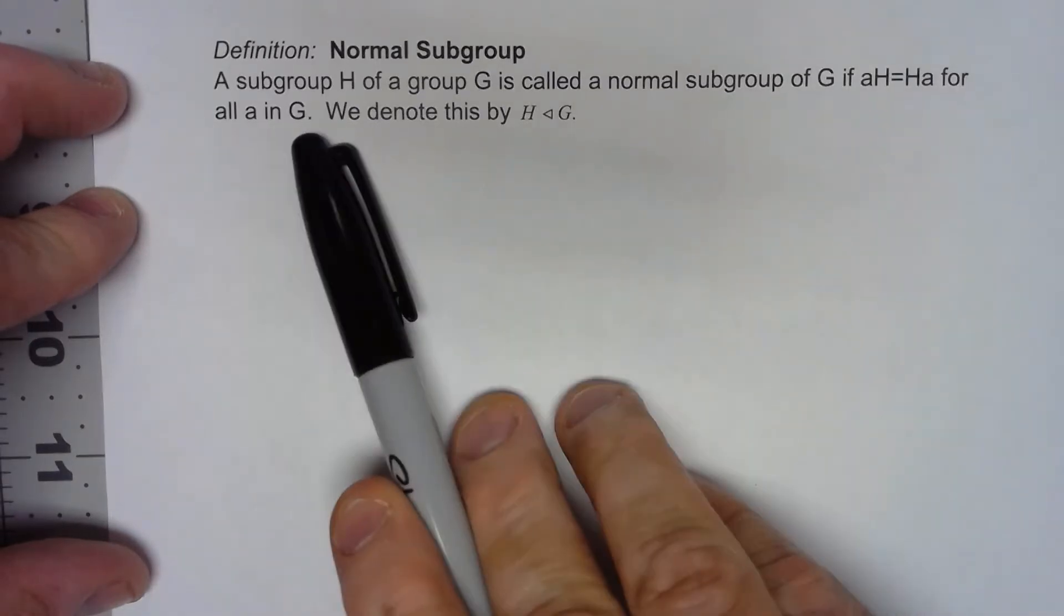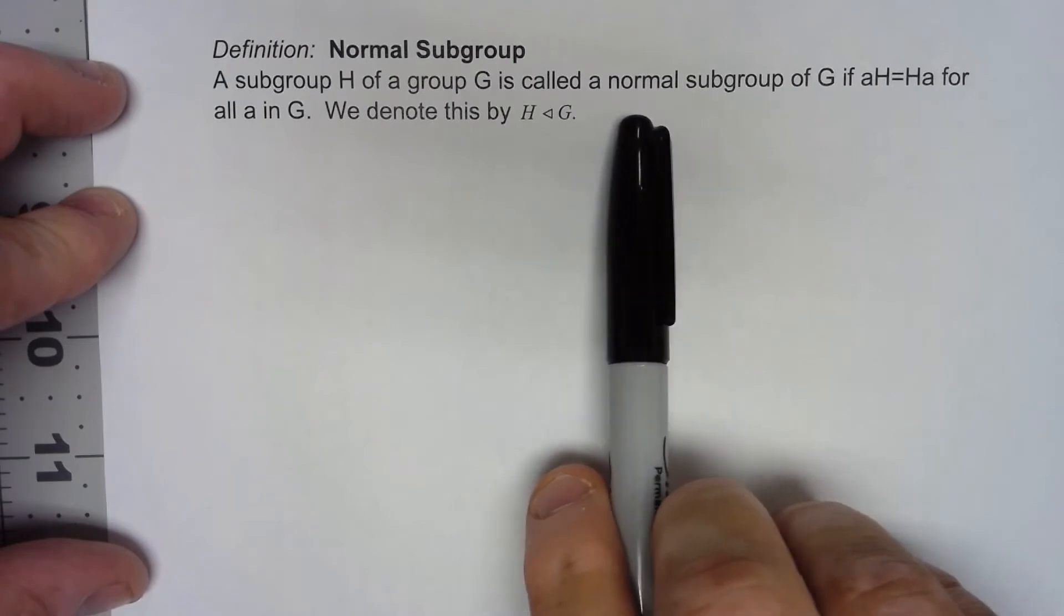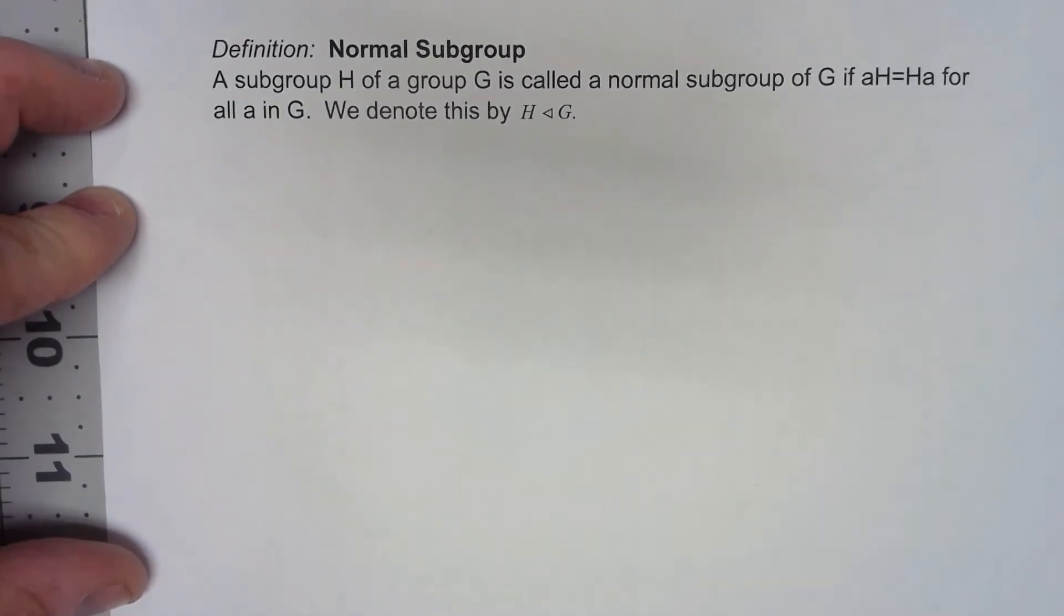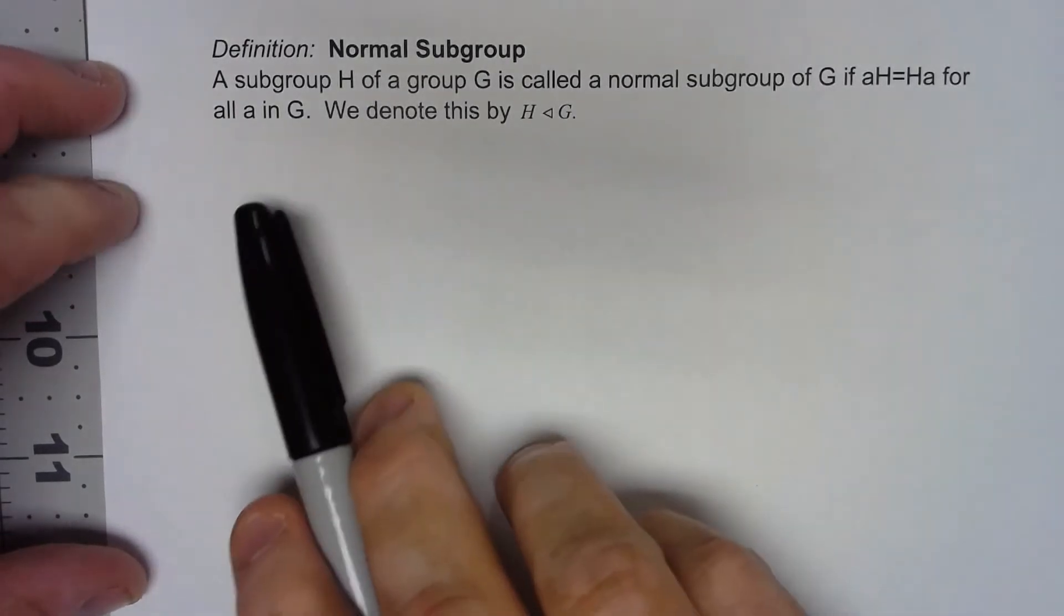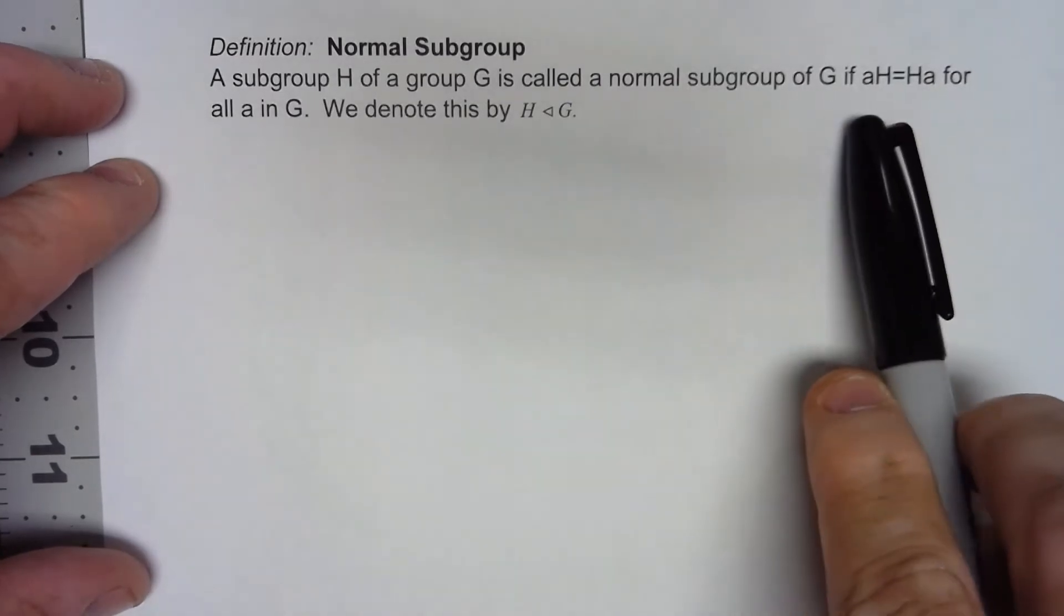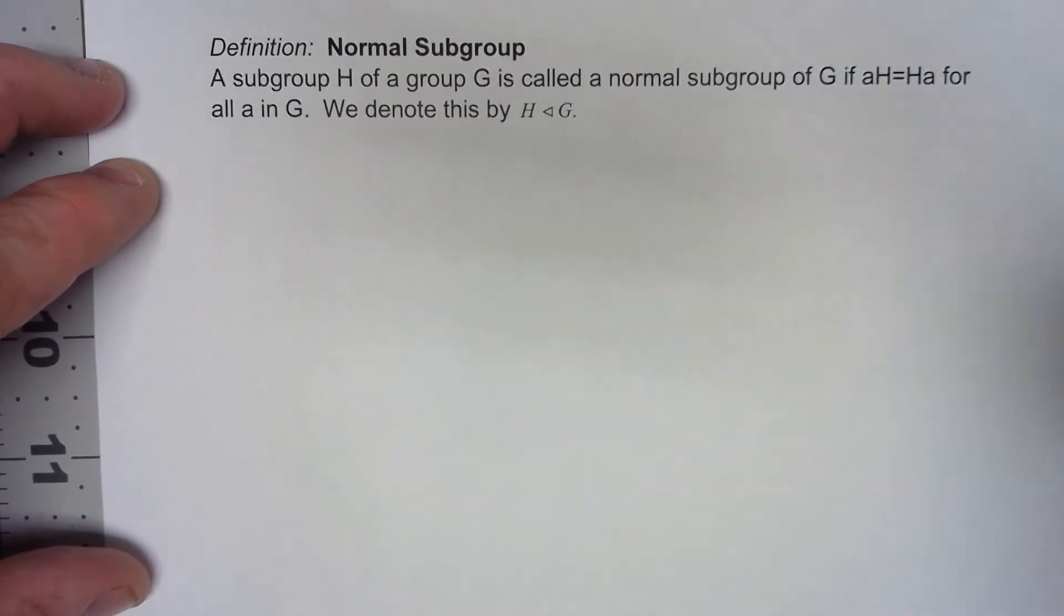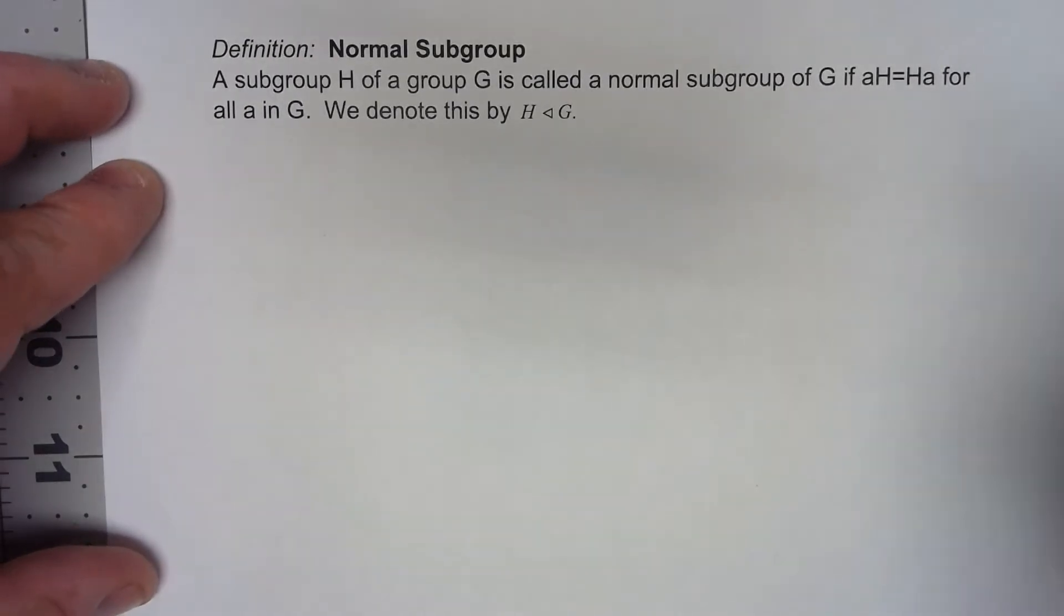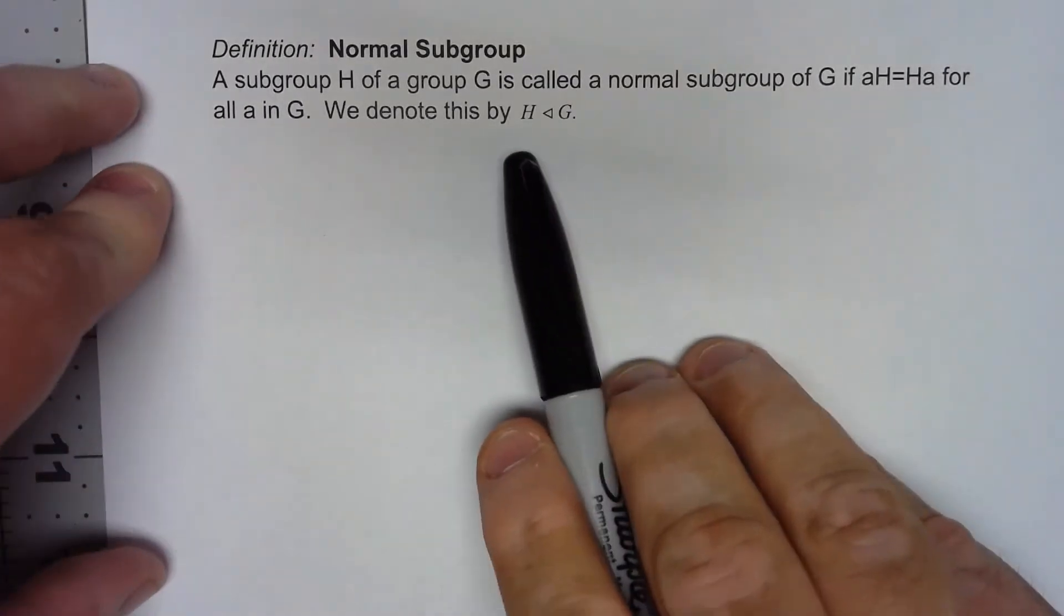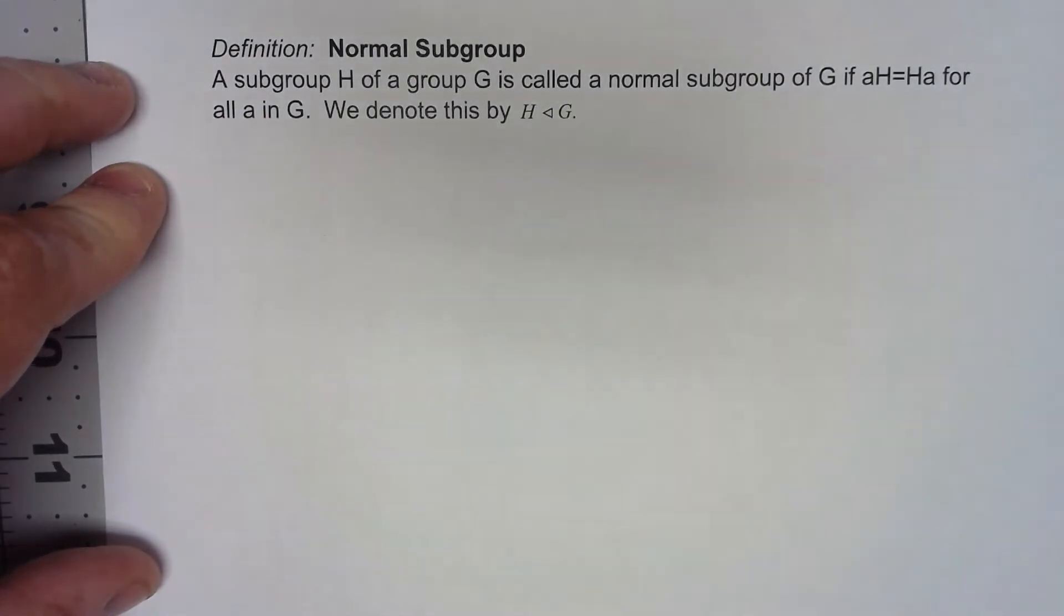We're looking at a subgroup H of a group G and we're going to call it a normal subgroup if for any element of G the left cosets and the right coset are the same thing. We'll use the notation H triangle G.